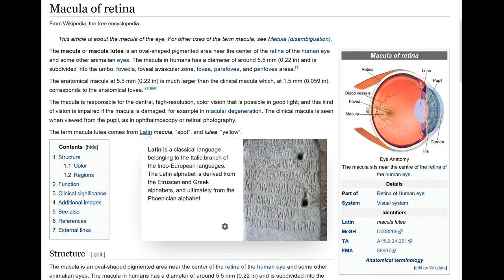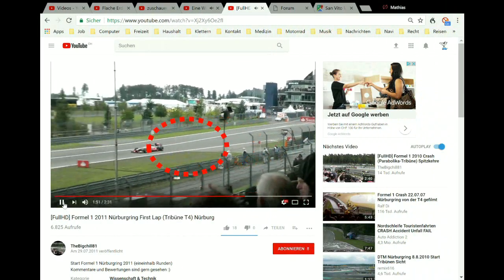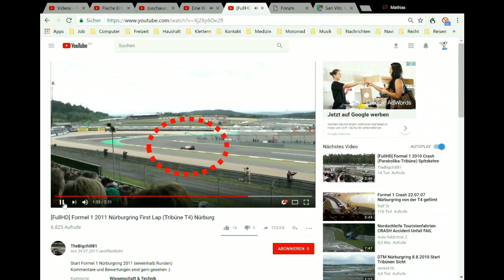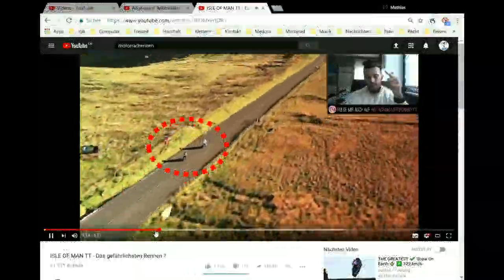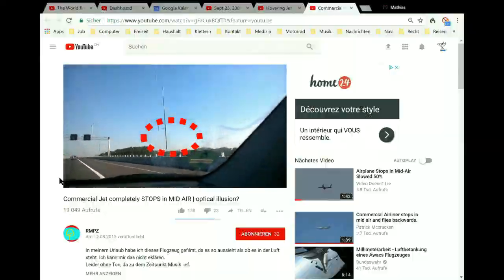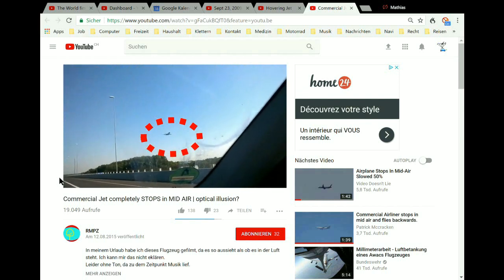But when we look at something, we always turn our eyes so that the object appears in the macular, in the yellow spot, the spot of sharp vision. When we film a moving object, we move the camera so that the object does not move out of our image. In the videos, the aircraft always stays in the middle of the picture, and the camera is changed from the front window to the side window if necessary, so that the aircraft always remains in the picture.